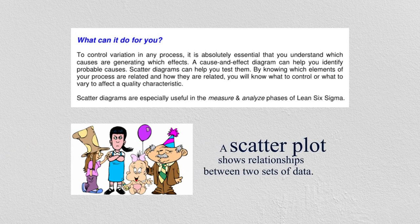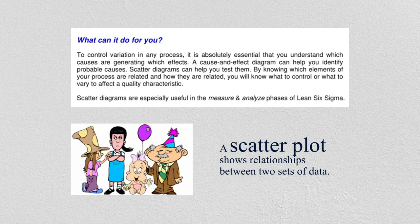The scatter plot emphasizes cause and effect relationships and helps control variation in any process. It is absolutely essential to understand which causes are generating which effects. A cause and effect diagram can help identify probable causes, and scatter diagrams can help test them by showing which elements of your process are related and how. Scatter diagrams are especially useful in the measure and analyze phases of Lean Six Sigma.